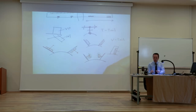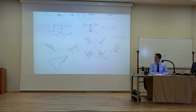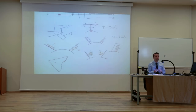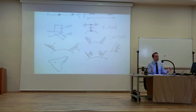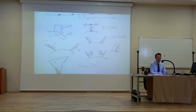Another question I sometimes get is about airplanes that look like delta wings. They don't really have a horizontal tail per se - they sometimes have a vertical tail or a V-tail, but not really a horizontal tail. So how do you get CM0 to be positive? If you look at this wing, it looks more like an airfoil.